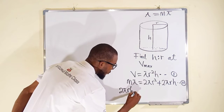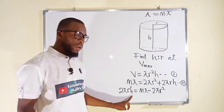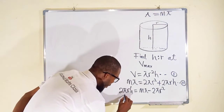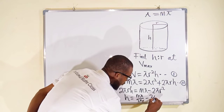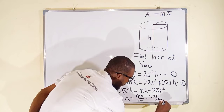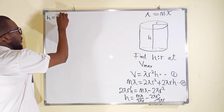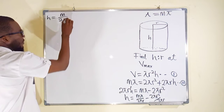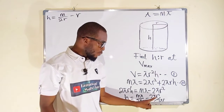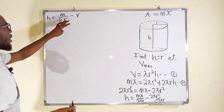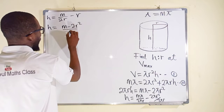From the second equation, making h the subject: 2 pi r h equals M pi minus 2 pi r squared. Dividing each term by 2 pi r gives h equal to M pi over 2 pi r minus 2 pi r squared over 2 pi r. Simplifying, the pi cancels to give h equal to M over 2r minus r, which as a single fraction is h equals (M minus 2r squared) over 2r.